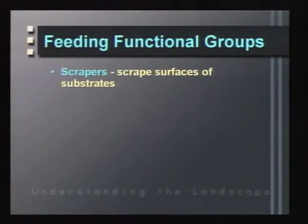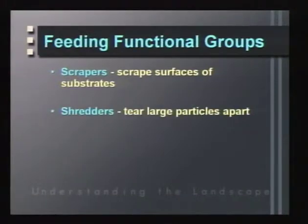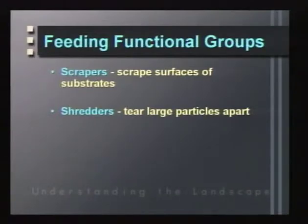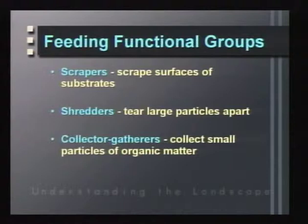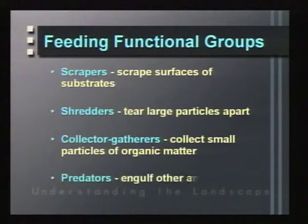Feeding functional groups are designated according to how the organism gathers its food. One major functional group is scrapers, which scrape algae from rock surfaces. Shredders tear large particles of food apart and consume them, such as tearing leaf material. Collector-gatherers collect small particles smaller than their mouth size and sweep them together to consume. Predators engulf other animals.